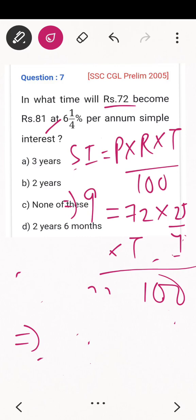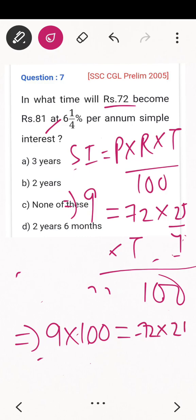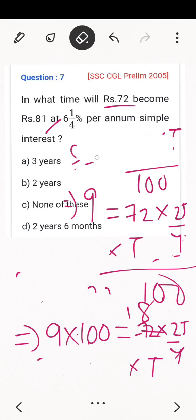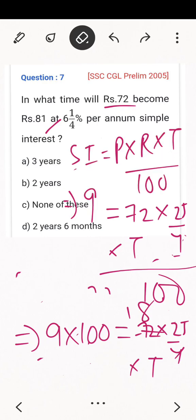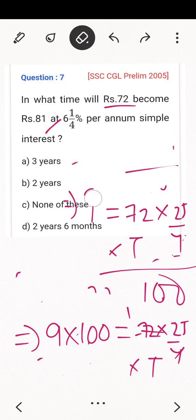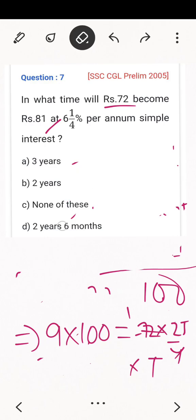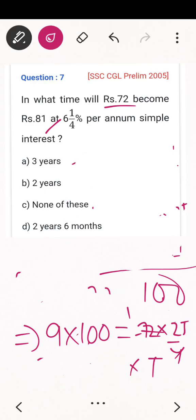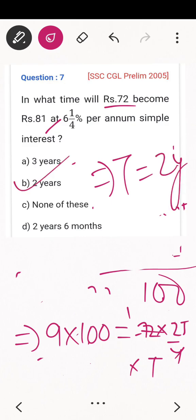Using SI = P × R × T ÷ 100: 9 = 72 × (25/4) × T ÷ 100. Cross-multiplying: 9 × 100 = 72 × (25/4) × T, giving 900 = 450 × T. So T = 900 ÷ 450 = 2. The answer is 2 years.